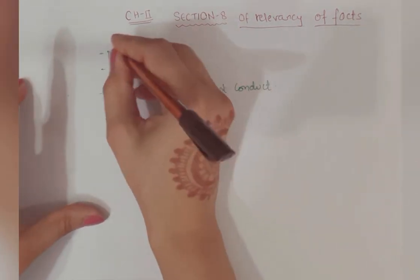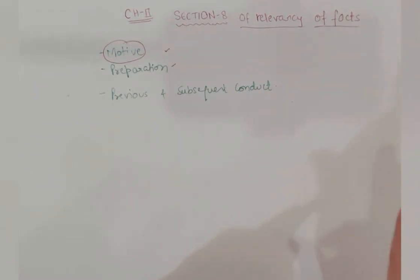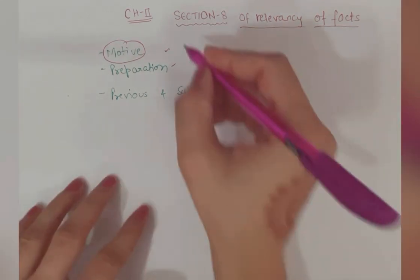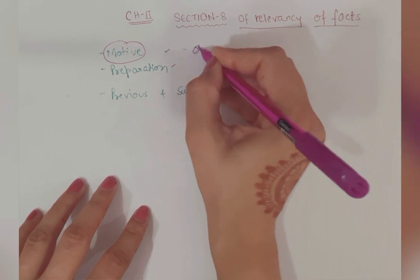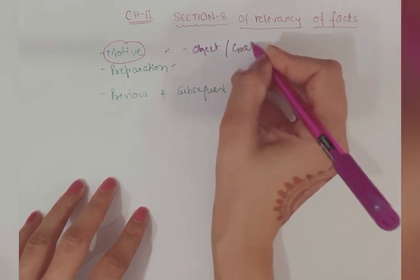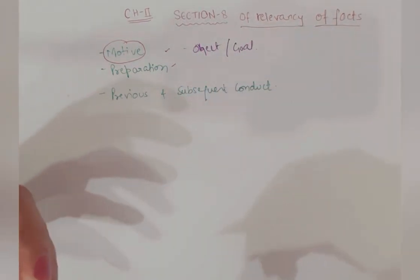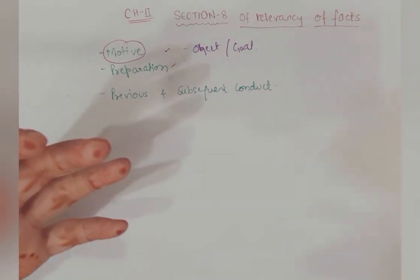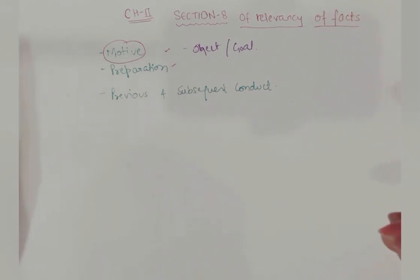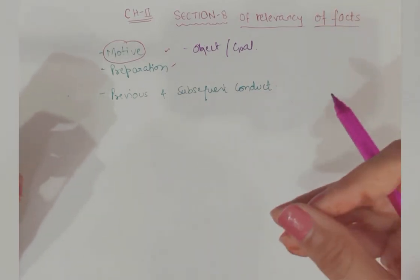Motive is the object or the ultimate goal which is sought to be attained by doing that particular act. Motive attracts a person to do particular act, and the question to be asked is why did the person do that act.